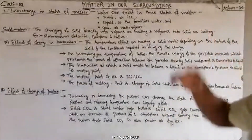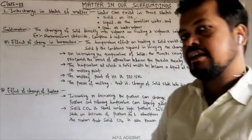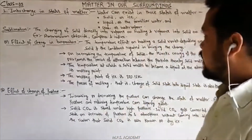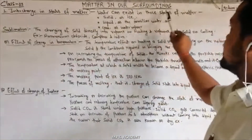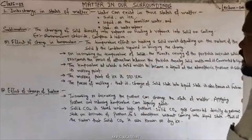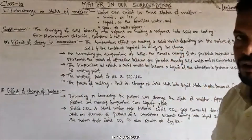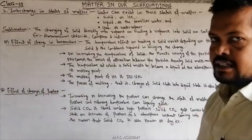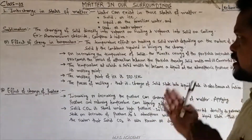This is the fourth lecture of 'Matter in Our Surroundings' of Class 9. Today we start with interchange in state of matter. Water can exist in three states of matter — solid as ice, liquid as water, and gas as water vapor.